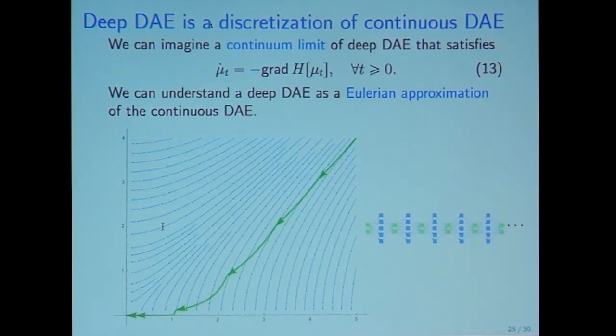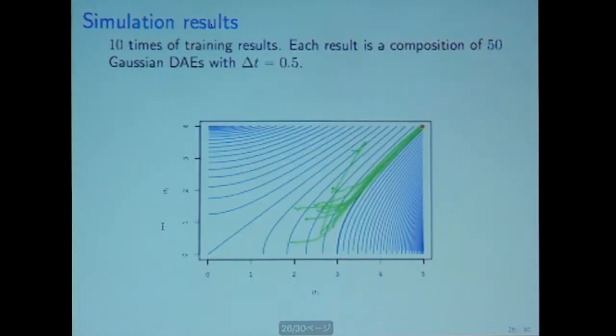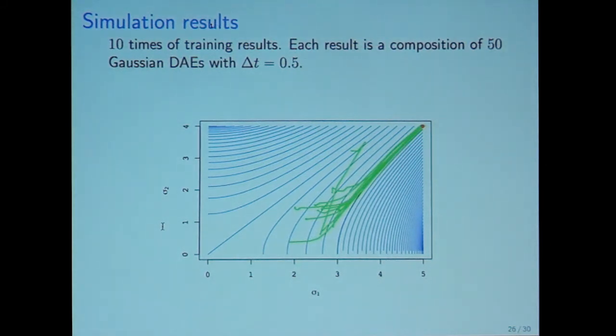Then we can expect that the trajectory tends to meet the gradient flow at every T. We can imagine a continuum limit of deep DAE that satisfies mu dot T equals minus gradient Shannon entropy at every time T. We can understand the deep denoising autoencoder as an Euler approximation of the continuous DAE. Euler approximation, I mean this is a broken line approximation. This simulation result seems to support our theory.